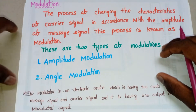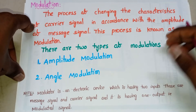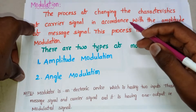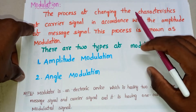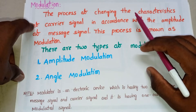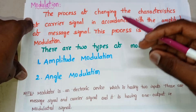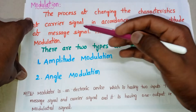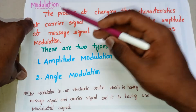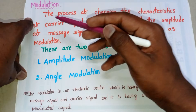Hello friends, in this video we'll discuss modulation technique in analog communication. Modulation is one of the important techniques in analog communication for transmitting a wave over a longer distance. In order to transmit a message signal for a longer distance, we need to apply modulation.